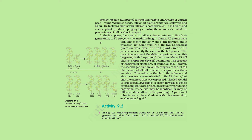Were the tall plants in the F1 generation exactly the same as the tall parent plants? Mendel tested this by getting both the parental plants and the F1 tall plants to reproduce by self-pollination. While the progeny of the parent plants are all tall, the second generation or F2 progeny of the F1 tall plants are not all tall — one quarter of them are short. This indicates that both tallness and shortness traits were inherited in the F1 plants, but only the tallness trait was expressed. This led Mendel to propose that two copies of a factor, now called genes, controlling traits are present in sexually reproducing organisms.